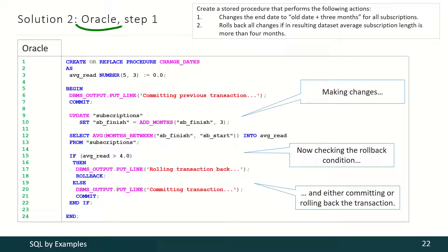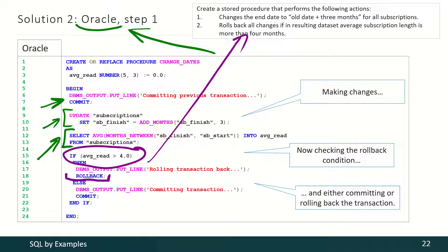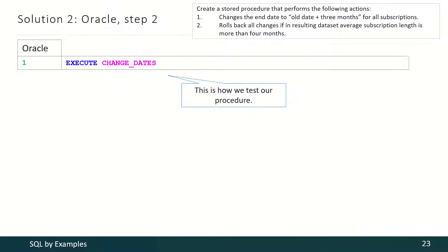For Oracle the idea is the same except for one difference. Remember that in this DBMS we cannot start a transaction explicitly because any data-changing operation starts a transaction. That's why we just have to commit any currently running transaction, then update the data, and then calculate the new average subscription length. Then we check for the condition from the task — if that condition is violated we have to roll back the transaction; otherwise we have to commit it. To test this procedure in Oracle we just have to execute such a simple query.